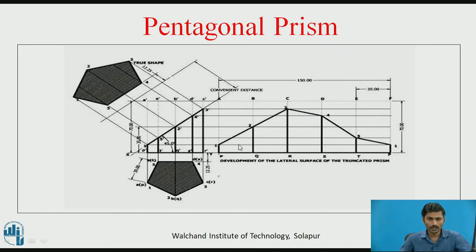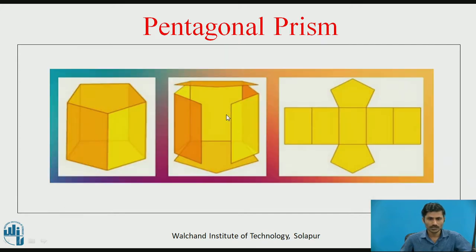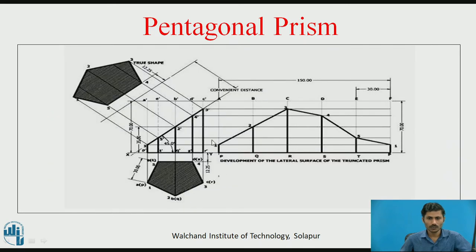Since we cut this pentagonal prism at the vertical edge PA, for the full pentagonal prism the development has the full axis height and a total length equal to 5 times the edge length. Without cutting the prism, the development runs from P to P, showing P to A and back to P again. This gives us the development of the lateral surface for the full prism.